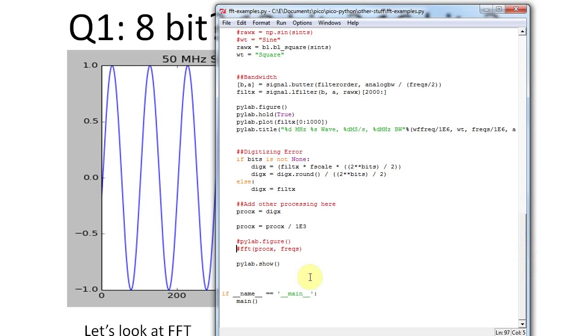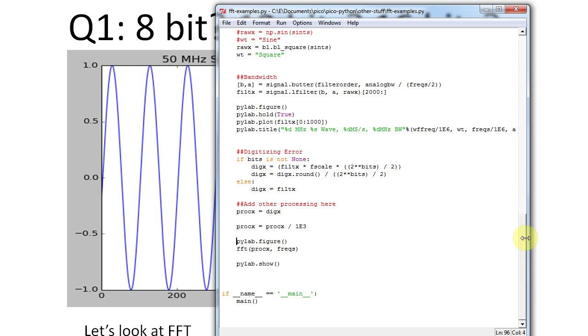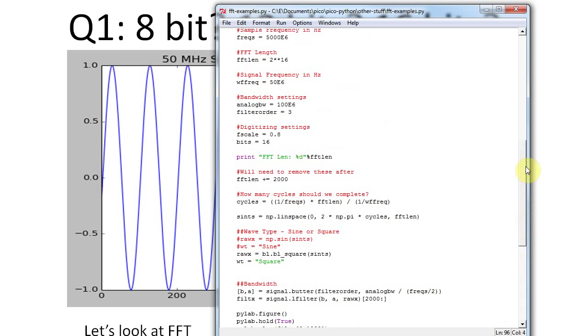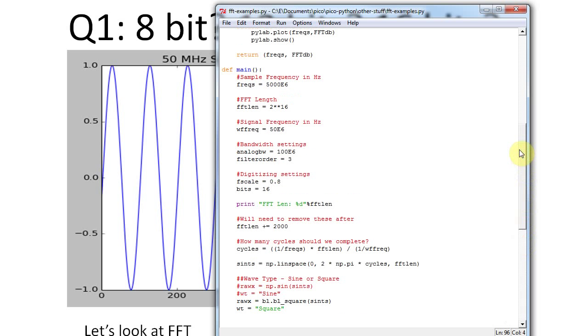We just turn on the FFT plot at the bottom there. And you can decide, let's make this not full scale. Let's use 8 bits, 100 megahertz analog bandwidth, and what do we got here, 50 megahertz frequency.